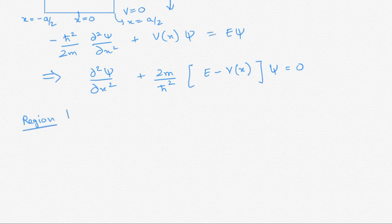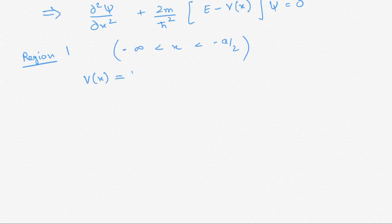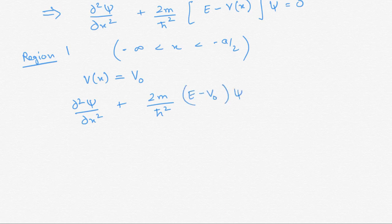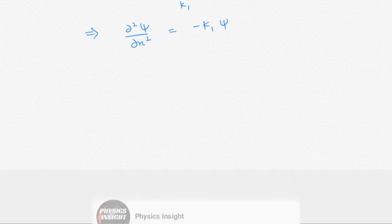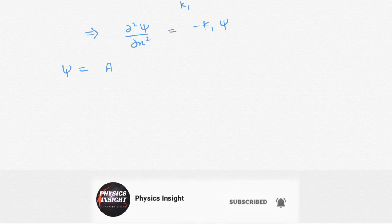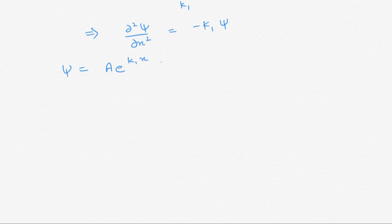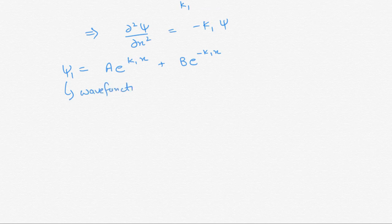Let's start with region 1, from −∞ to −a/2. In this region V(x) = V₀, so the Schrödinger equation gives d²ψ/dx² = k₁²ψ. Defining k₁ accordingly, the solution to this differential equation is ψ = A·e^(k₁x) + B·e^(−k₁x). We call this wave function ψ₁, representing the wave function in region 1.